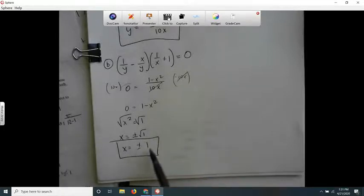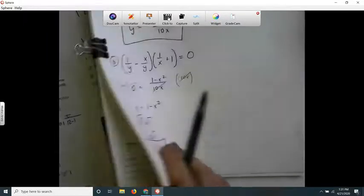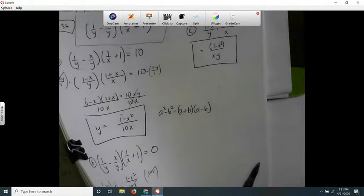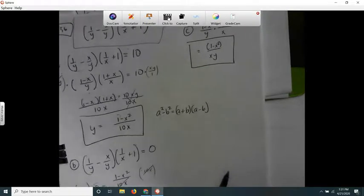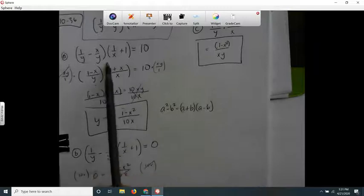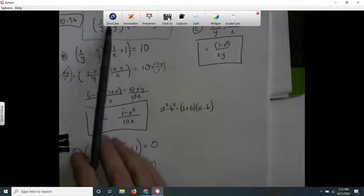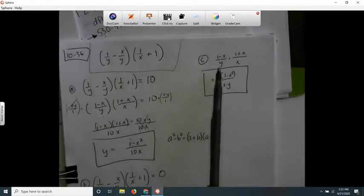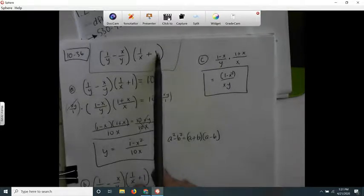For letter c, it wants me to rewrite the expression as a single fraction in simplified form. Right here we already have that common denominator. That's where the 1 minus x comes from. If you think of 1 as x over x.